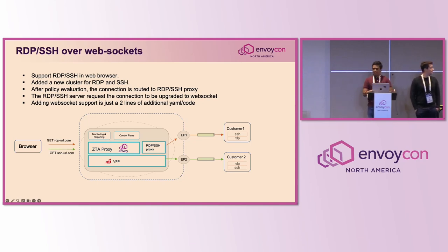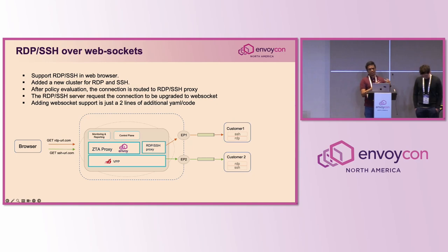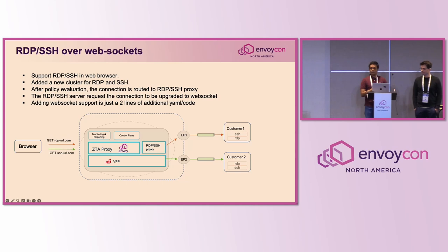When we started this project we only had web applications — HTTP and HTTPS. As we got more customer feedback, we wanted to support RDP and SSH in the browser as well. We implemented an RDP and SSH proxy behind Envoy, allowing us to reuse all the zero-trust functionality already built in. We needed WebSocket support, and it was just two lines of change — that's all it took to have RDP and SSH support.